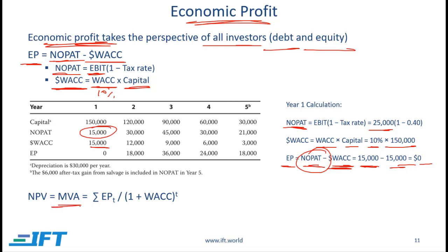The market value added of a project is simply the present value of the economic profit for each year. So if we have a multi-year project, we calculate the economic profit for each year and then find the present value. The present value of the economic profit gives us the market value added for that particular project.